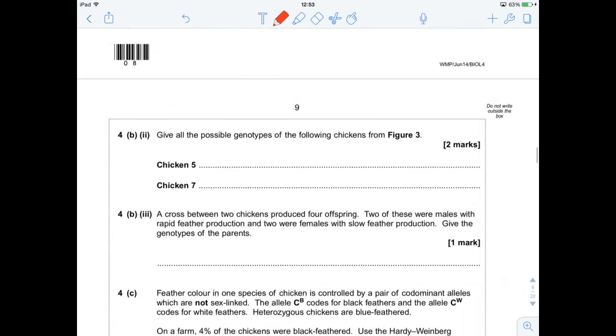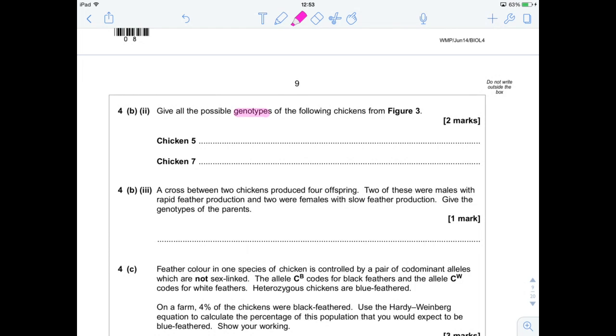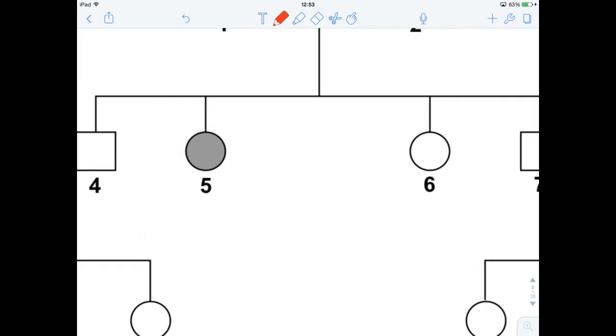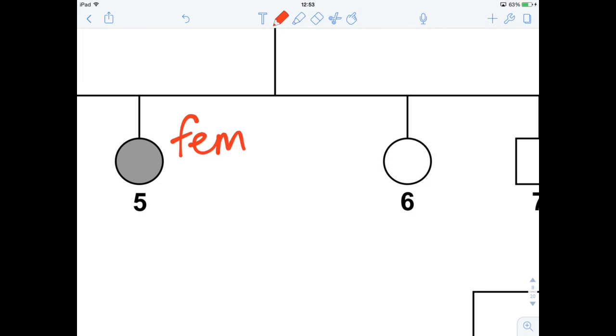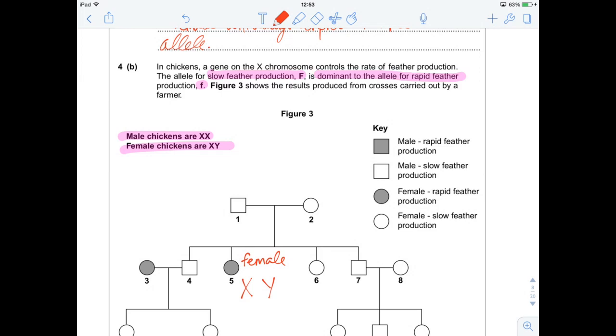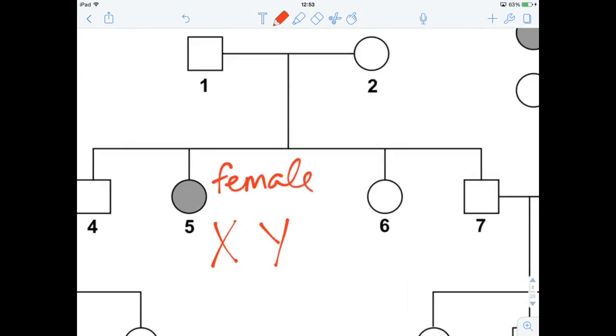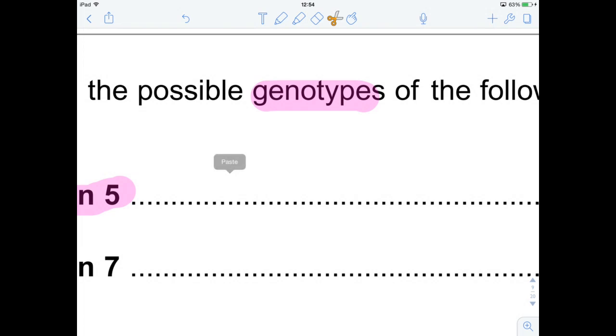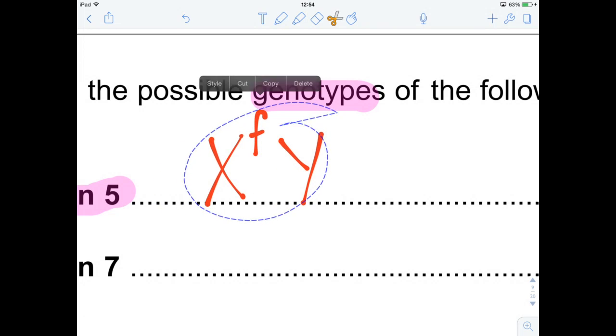Moving on, give all the possible genotypes of the following chickens from Figure 3. Chicken 5 first. I'm going to get rid of these bits. Chicken 5, female. So she is going to have an X and a Y. Remember, it's the opposite of humans. And she is a rapid feather producer. Rapid feather producer is the recessive allele. So she is going to be that. That's the only possible genotype she could possibly be.